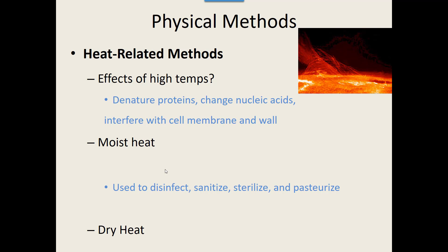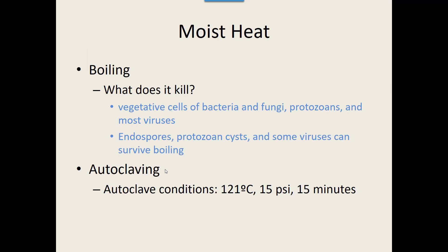Examples of moist heat include anything involving water and high temperature. Boiling kills vegetative or dormant cells of bacteria, fungi, protozoa, and most viruses. However, boiling does not always kill endospore-making bacteria, protozoan cysts, and some viruses. Some of the first use of aseptic techniques showed that boiling instruments really did help — it kills a lot of organisms, but not all.